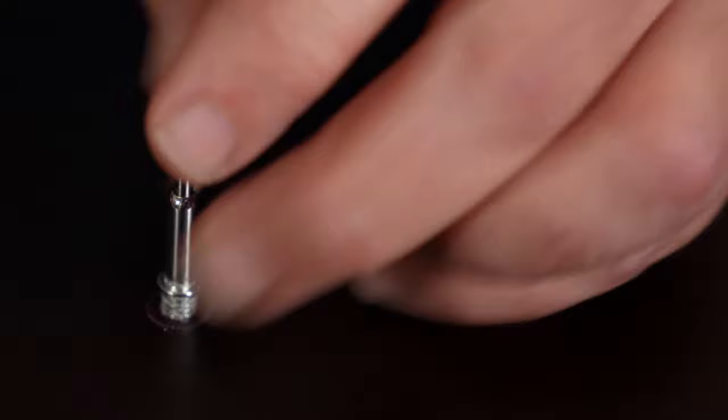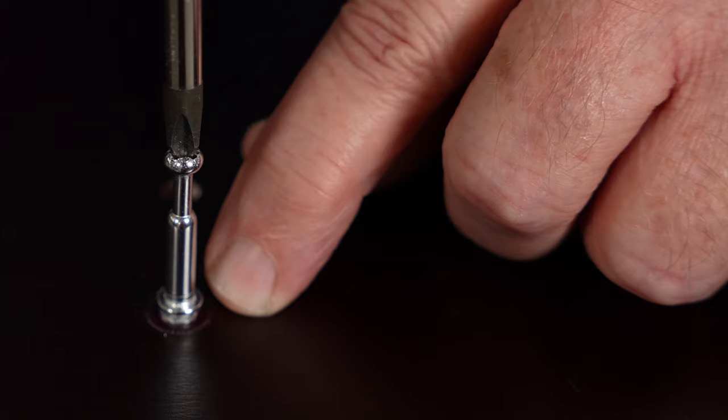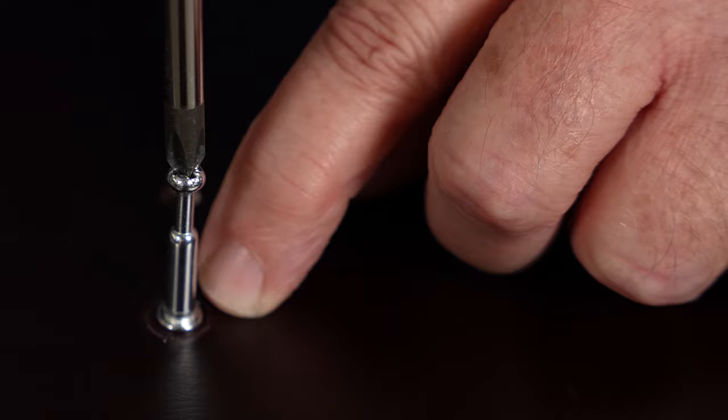So we're just going to turn this in by hand at first, take a Phillips head, and turn this down to where that flange is flush with the wood. That's as far as that needs to go. You don't want to over tighten it, and you don't want to make it too loose.